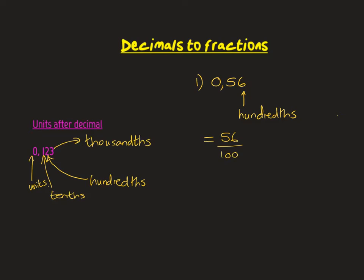Now we need to simplify this fraction. Think about what could go into both 56 and 100. You can start with dividing by two since these are even numbers, then try dividing by fours, sixes. When you divide top and bottom by two, remember two over two equals one, so you're only changing the look, not the value.